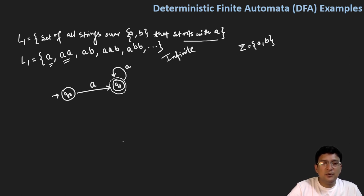Then we will see strings that start with A followed by any combination of A or B - we don't mind. That means from Q1 with symbol 'a' we stay in Q1 state, and from Q1 with symbol 'b' we also remain in Q1 state.